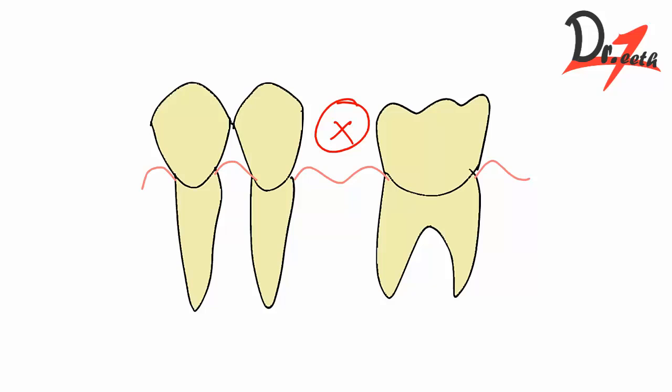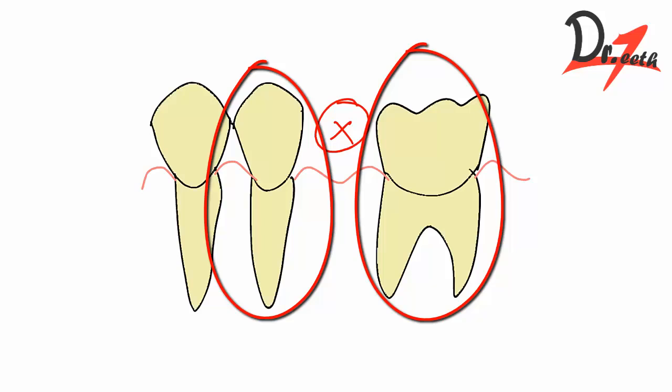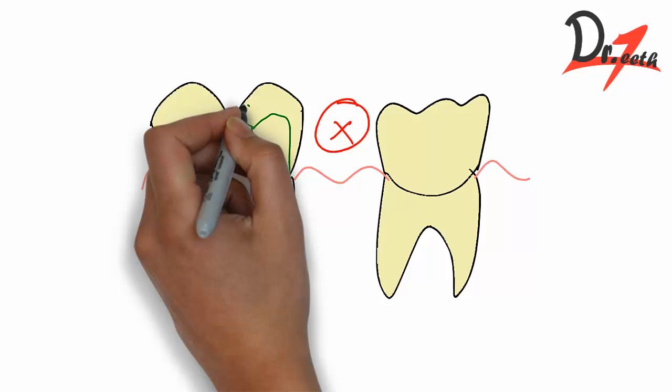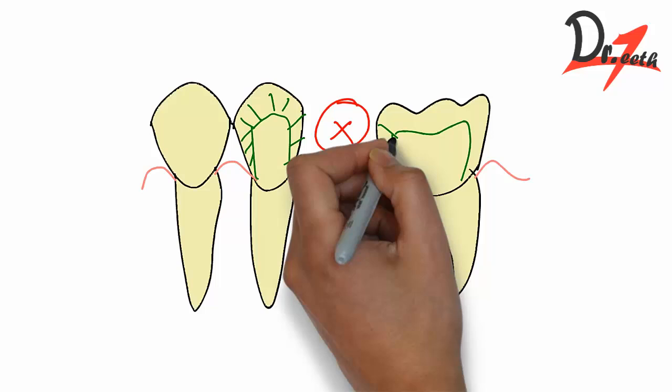It is called partial because only a few teeth are missing. So what we do in that case is take support from the surrounding teeth and prepare the tooth. Tooth preparation is basically cutting the external portion of the tooth in such a way that it can stabilize the fixed partial denture.